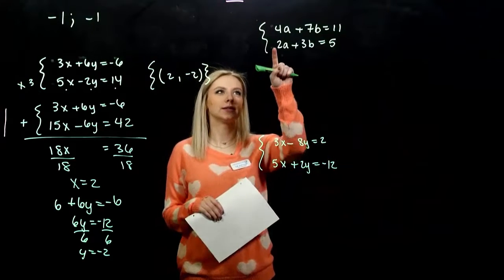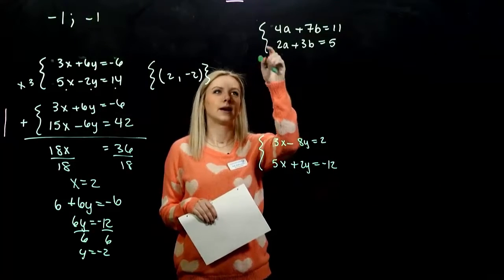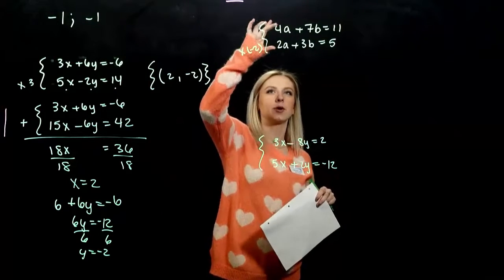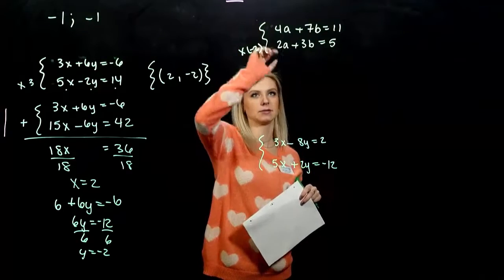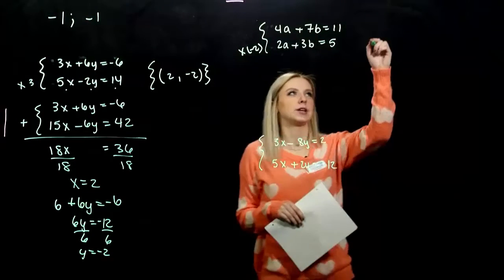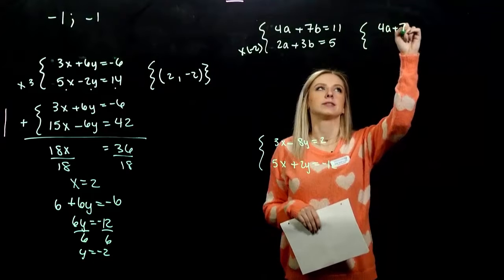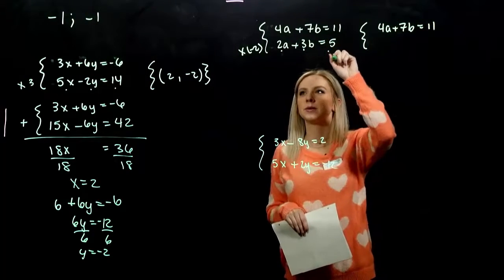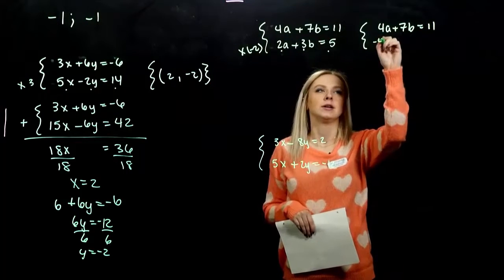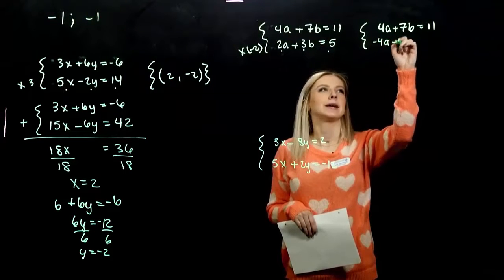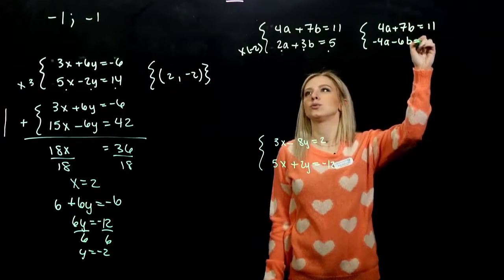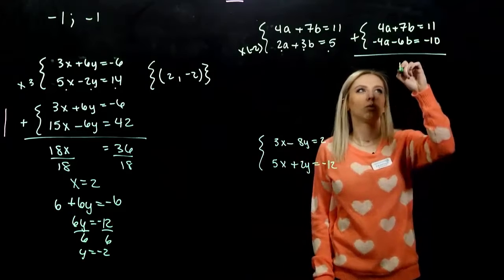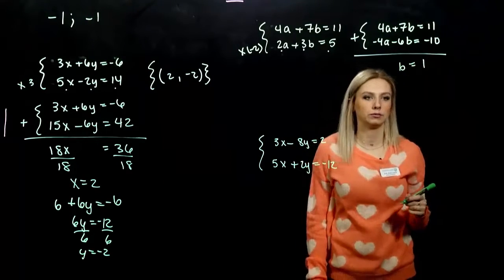So how did you have to alter this second equation? I need to multiply it by a factor of negative 2, because I need them to be the same coefficient, but with opposite signs. So we didn't change the first. 4A plus 7B is 11 was unaltered, but every single term needs to be multiplied by negative 2 down here. So negative 4A minus 6B is equal to negative 10. Now if we add those together, the A's are gone. I've got 1B is equal to 1. That's nice.